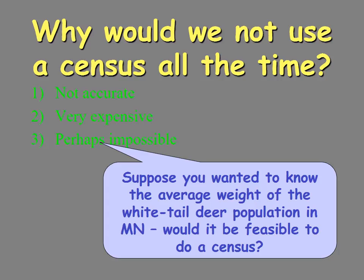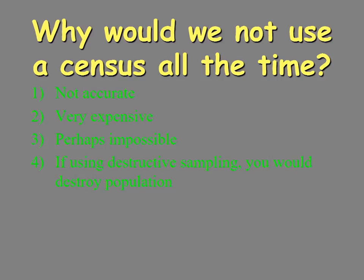In some cases it's impossible to do a census. For example, if we want the average weight of a white-tailed deer, we're not going to be able to gather every deer and weigh it. If we're testing vehicles for crash safety ratings, we would have to crash every car made by that automaker. This is called destructive sampling — you would destroy the population. Examples include breaking strength of soda bottles, lifetime of flashlight batteries, and safety ratings for cars.